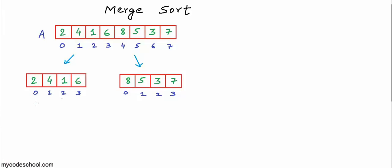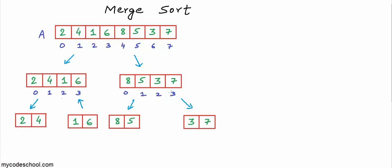The sub-list comprising four elements 2, 4, 1, and 6 can be further divided into two halves, and the list comprising 8, 5, 3, 7 can be divided into sub-lists 8, 5 and 3, 7. The solution for the sub-list 2, 4, 1, 6 can be constructed after we sort the two sub-lists 2, 4 and 1, 6 and merge them back. Similarly, we can sort sub-lists 8, 5 and 3, 7 and merge them back to sort the 8, 5, 3, 7 sub-list.